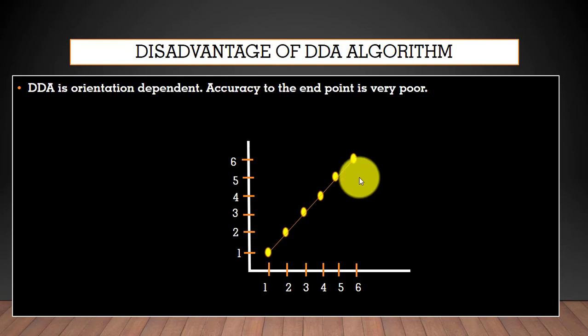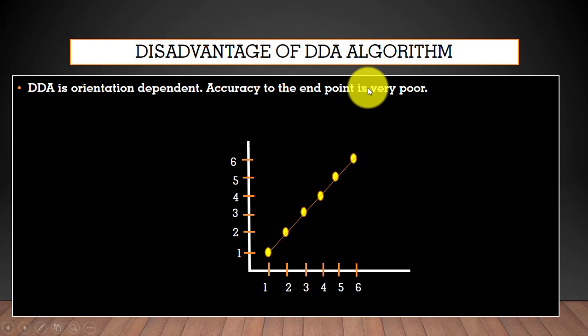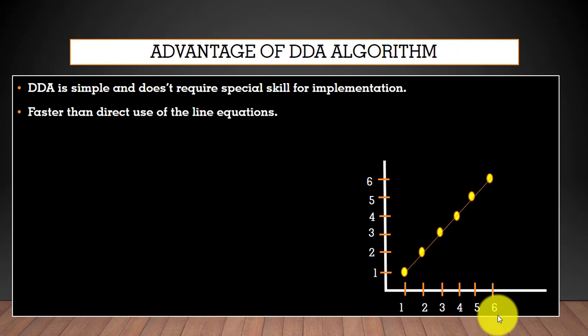The disadvantage of this algorithm is that it is orientation dependent and the accuracy of the endpoints is very poor — that is why we can get an extra point such as (7, 7). The advantage of this algorithm is that it is simple, it does not require any special skill for implementation, and it is faster than the use of direct line equations.